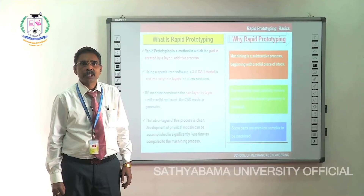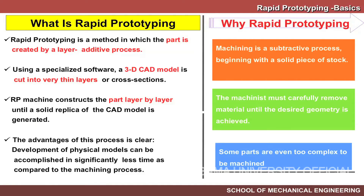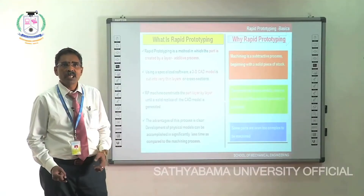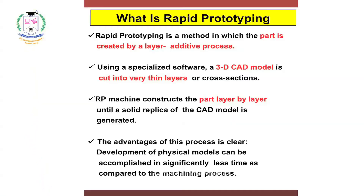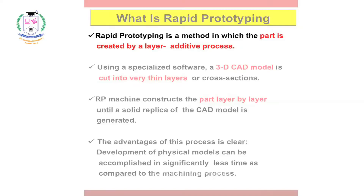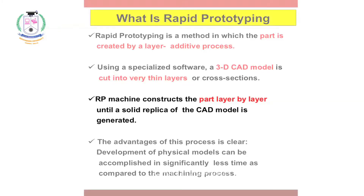First of all, what is rapid prototyping? Why do we need rapid prototyping? How does it differ from conventional prototyping? Rapid prototyping is a process made by addition, subtraction, or sculpture method. It uses specialized 3D software which cuts the model into very thin cross sections, converted to an RP machine that generates parts layer by layer until a solid replica of the CAD model is generated. Physical models can be developed significantly faster compared to conventional machining.